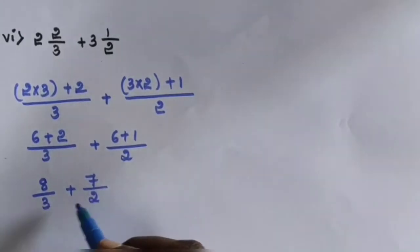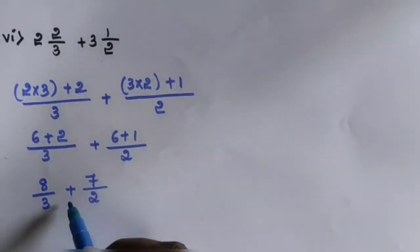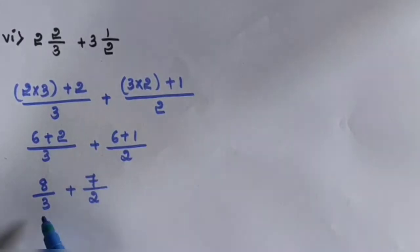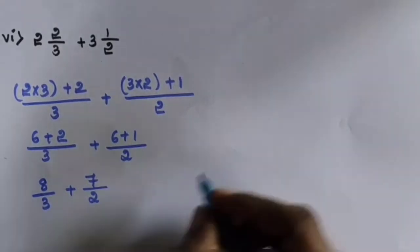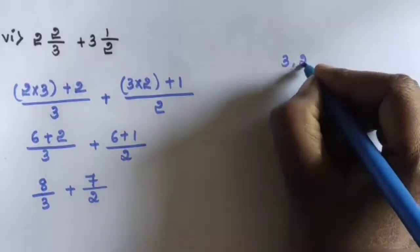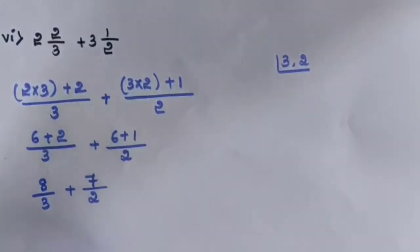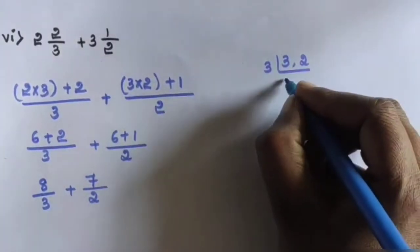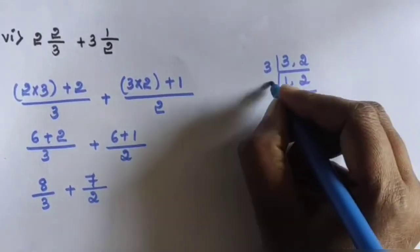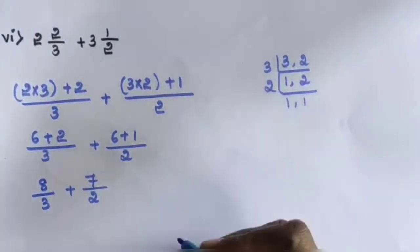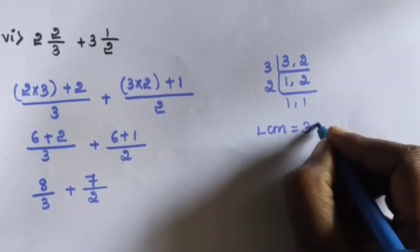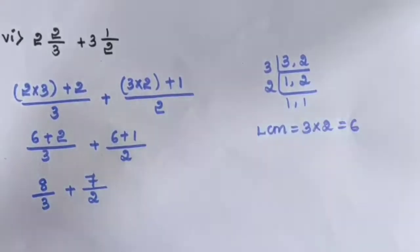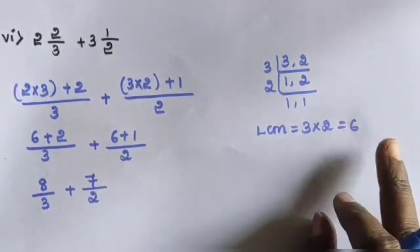These are improper fractions. Now 8/3 plus 7/2 — the denominators are different, so find the LCM. LCM of 3 and 2: 3 ones are 3, 2 ones are 2. LCM is equal to 3 into 2, which is 6. So 6 is the LCM.